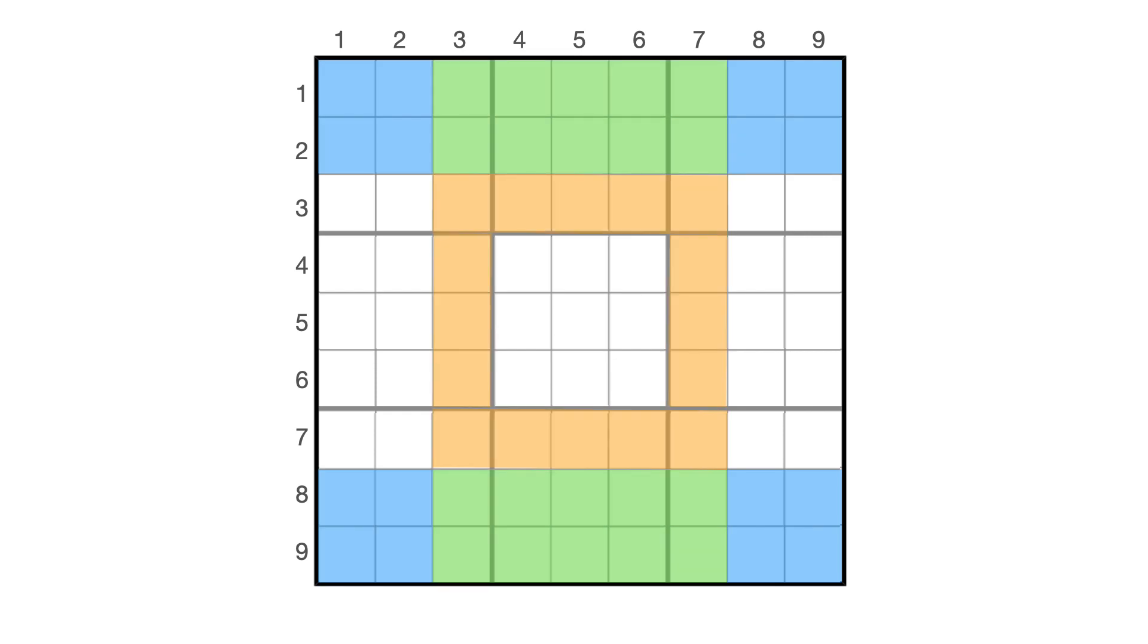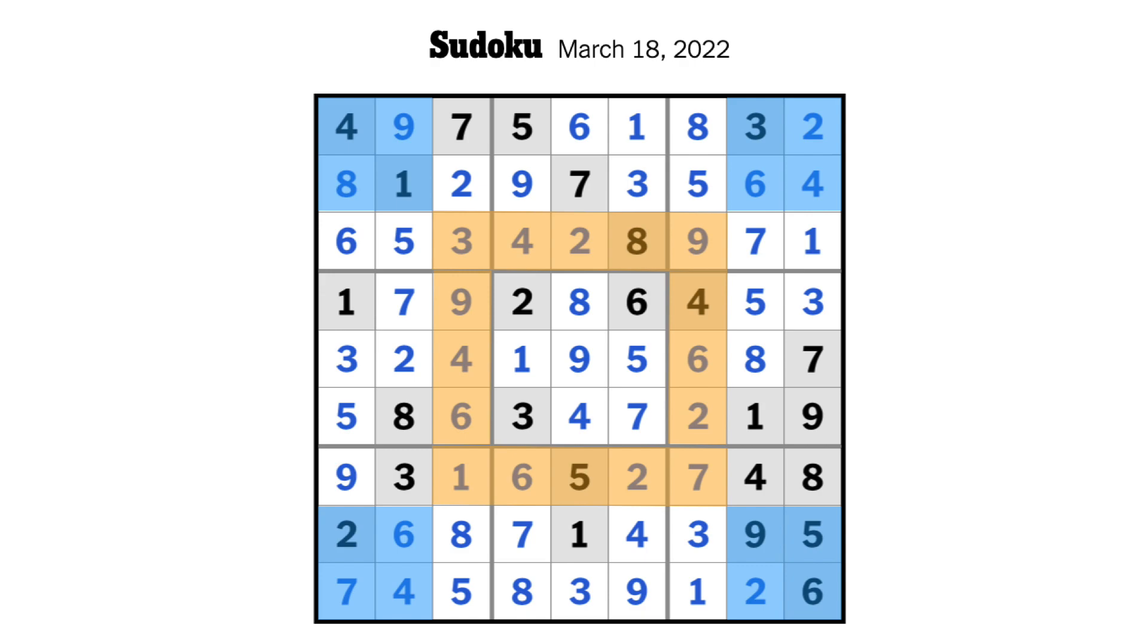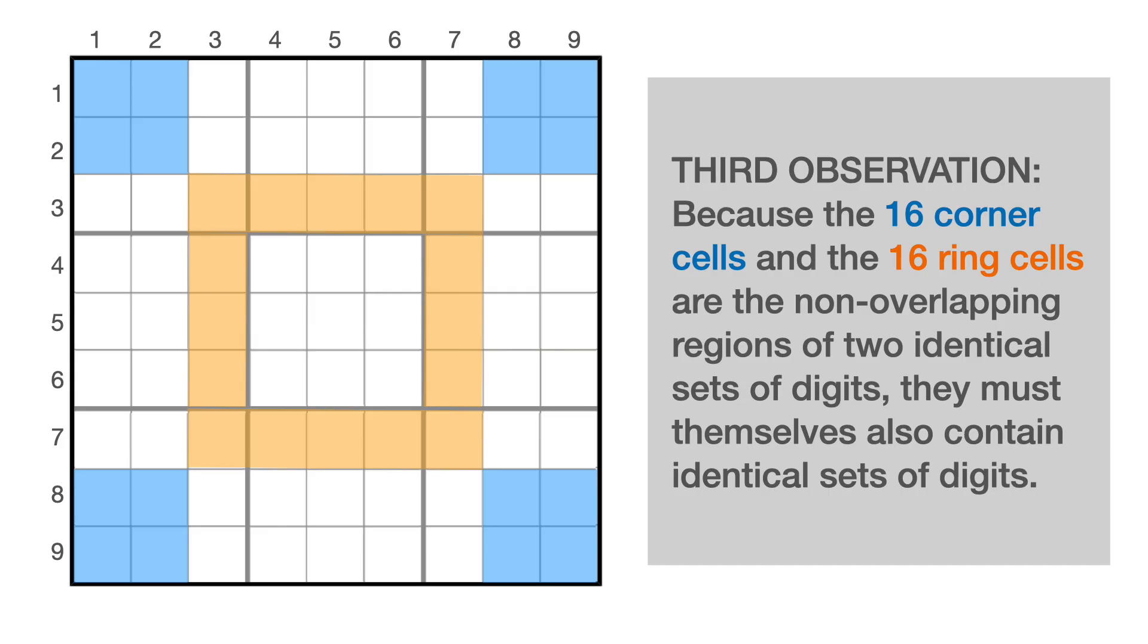And you probably know what's next. Let's overlap them. And as we've already shown, the non-overlapping regions, which is to say the blue cells and the yellow cells, must contain identical sets of digits because we started with equivalent sets and we removed the same thing, the green cells. And if we get rid of those green cells, you will see, hopefully not to your surprise, that this pattern we're looking at right now is the same one we looked at with the New York Times puzzle, which we can sum up in our third and final observation. Because the 16 corner cells and the 16 ring cells are the non-overlapping regions of two identical sets of digits, they must themselves also contain identical sets of digits.